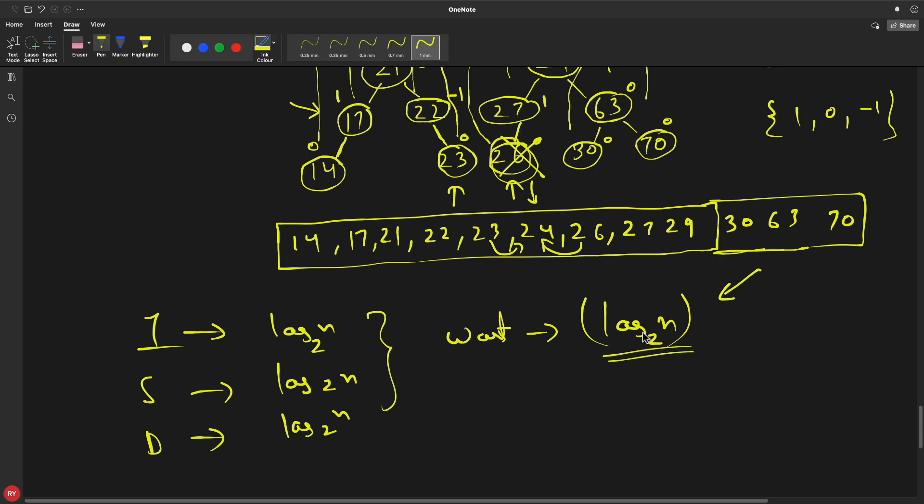This is balanced binary search. That's why you are getting this log base 2 n in worst case. If it is just binary search tree, then the worst case is n. We know that, right? I started this whole thing with the right skewed or left skewed.